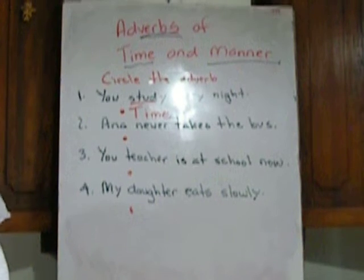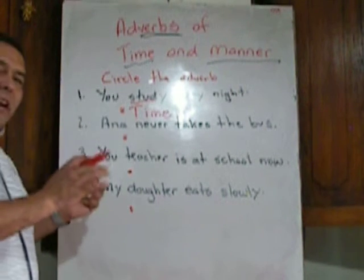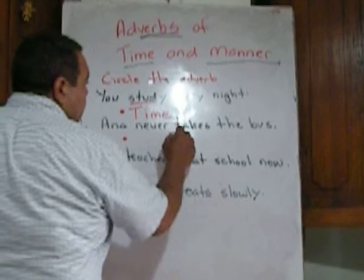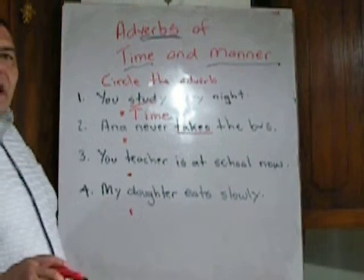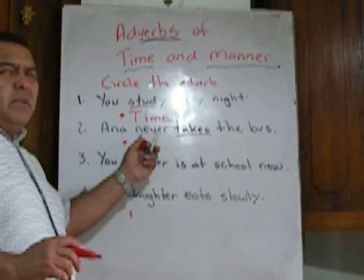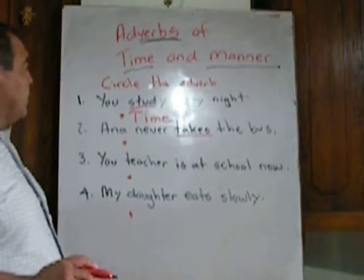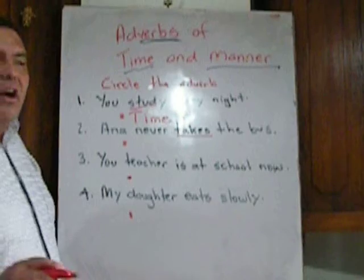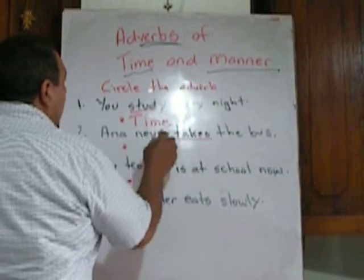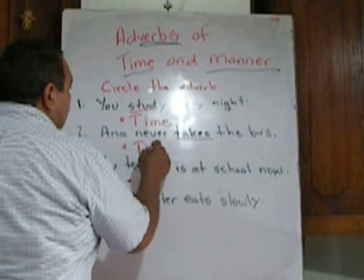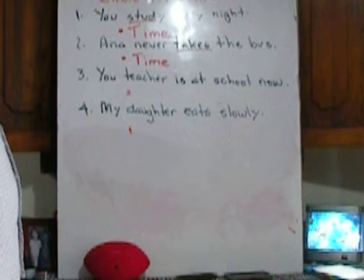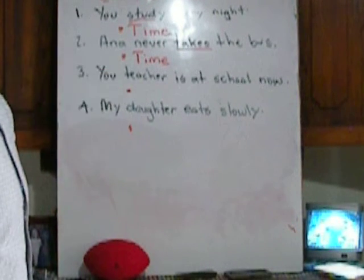'Anna never takes the bus.' Let's identify the verb: 'takes' is the verb. Is 'never' telling me how she takes the bus, or when? Exactly — 'never' answers how often. So this is an adverb of time. When or how often is an adverb of time.